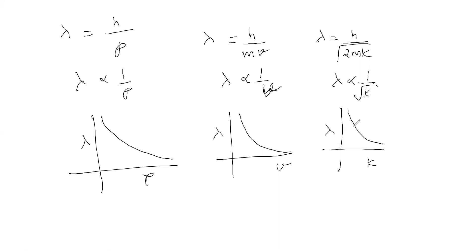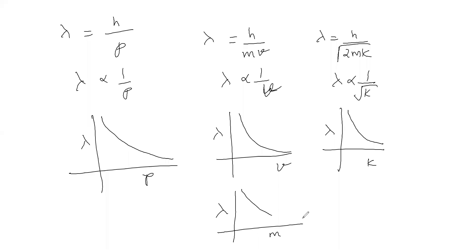If velocity is fixed, we get a de Broglie wavelength versus mass graph. The wavelength is inversely proportional to mass at constant velocity, giving an inequilateral rectangular hyperbola.